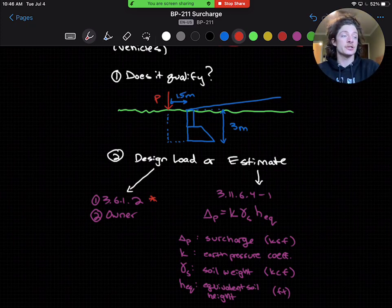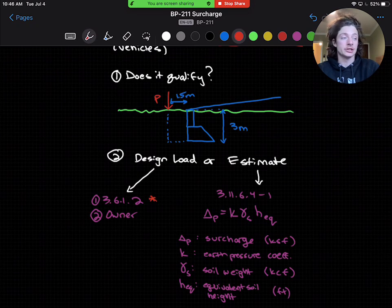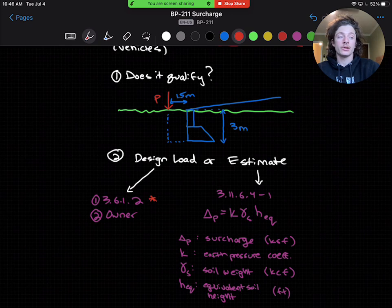In this section, the AASHTO specifications give various design loadings from the axles of different vehicle types, like I was discussing before, or the design truck I showed above. Or we can estimate the surcharge load with equation 3.11.6.4-1.